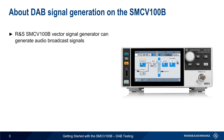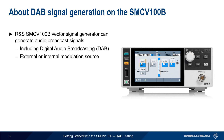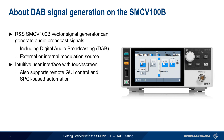The Rohde & Schwarz SMCV100B is a compact vector signal generator that can be used to generate a wide variety of both audio and video broadcast signals, including digital audio broadcasting or DAB signals. These signals are generated using either an internal or external modulation source. The SMCV is operated via a touchscreen and intuitive graphical user interface, but can also be remotely controlled over VNC and supports industry-standard SCPI-based automation.